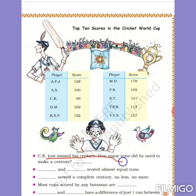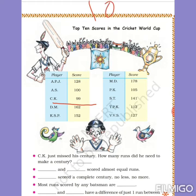First question: CK just missed his century - how many runs did he need to make a century? Look at CK's score - it is 99. A century is made at 100, so CK just missed by one. He was one number short of making a century.